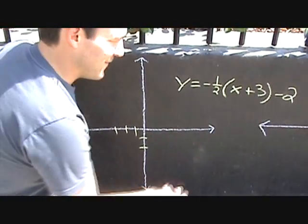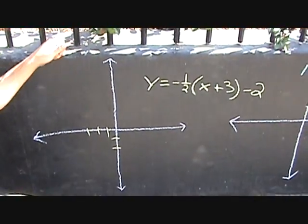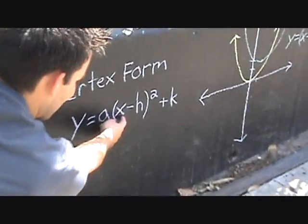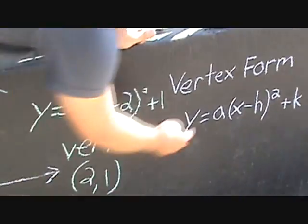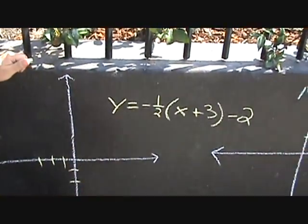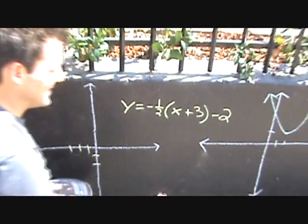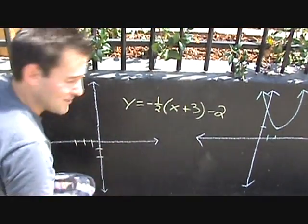Now you may be confused. Why did I say negative 3? If we go back to what vertex form is, we're looking at what is being subtracted from x. And in this case, negative 3 is being subtracted from x and it's being disguised as plus 3.